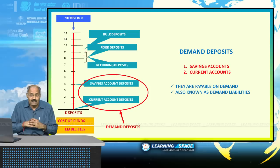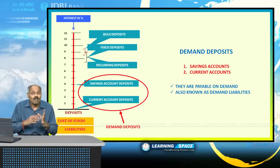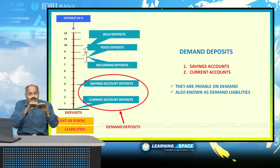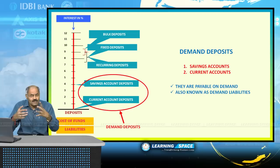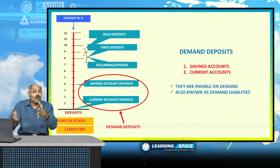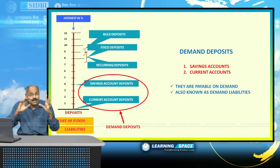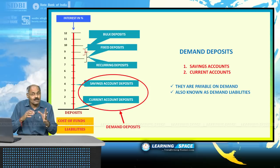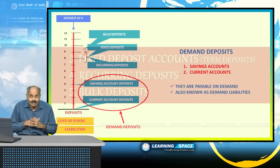Demand deposits include current accounts and savings accounts. Why are they called demand deposits? Because you can deposit at any time and withdraw at any time — these deposits are payable on demand. That's why they are called demand deposits, and you can also call them demand liabilities, since deposits in the banking system are nothing but liabilities. These two types of deposits are known as demand liabilities.